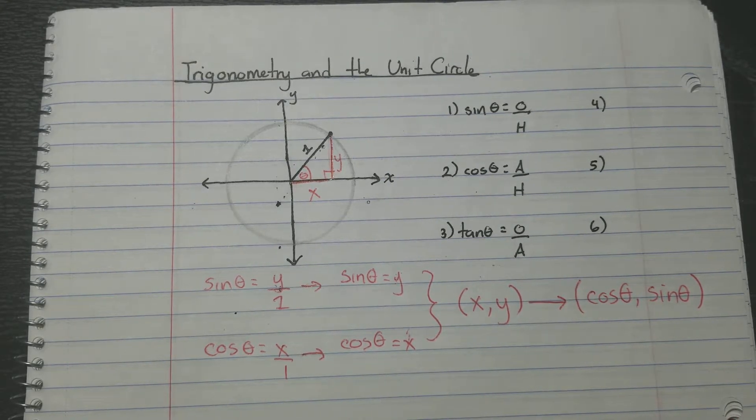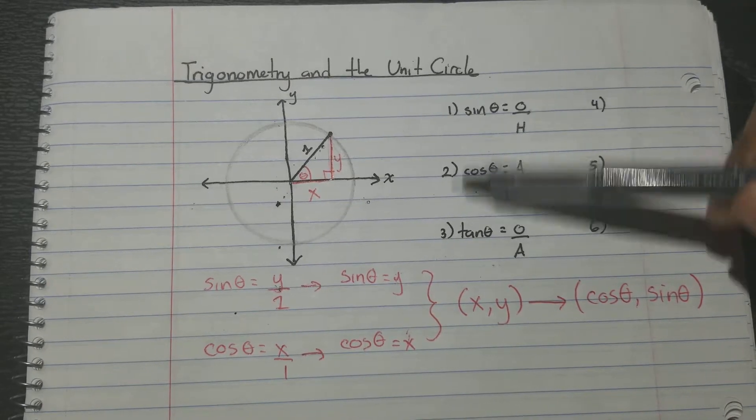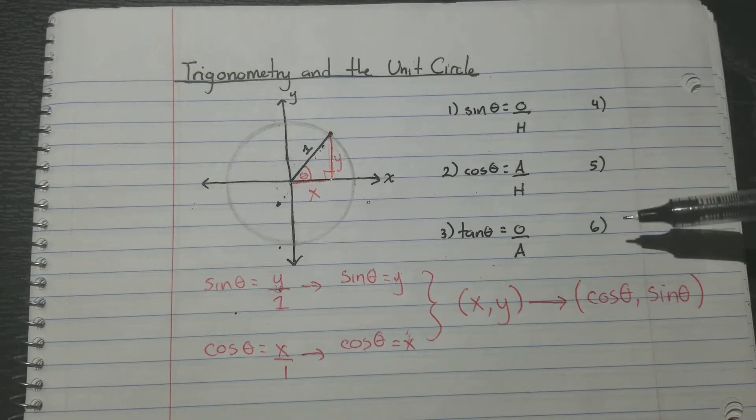Alright then. Well, what about 4, 5, and 6? Alright, we already know the first three. Does that mean there's another three? And actually, yes.